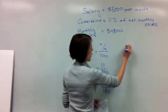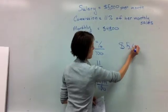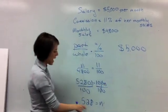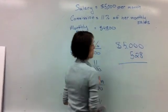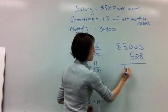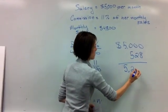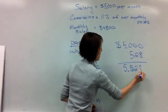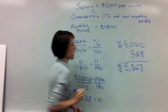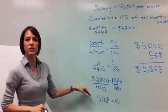So we're going to take her salary of $5,000 and we're going to add her commission, which is $528. So that means that in total for the month, she made $5,528. Don't forget commission. You're always going to add back to the salary.